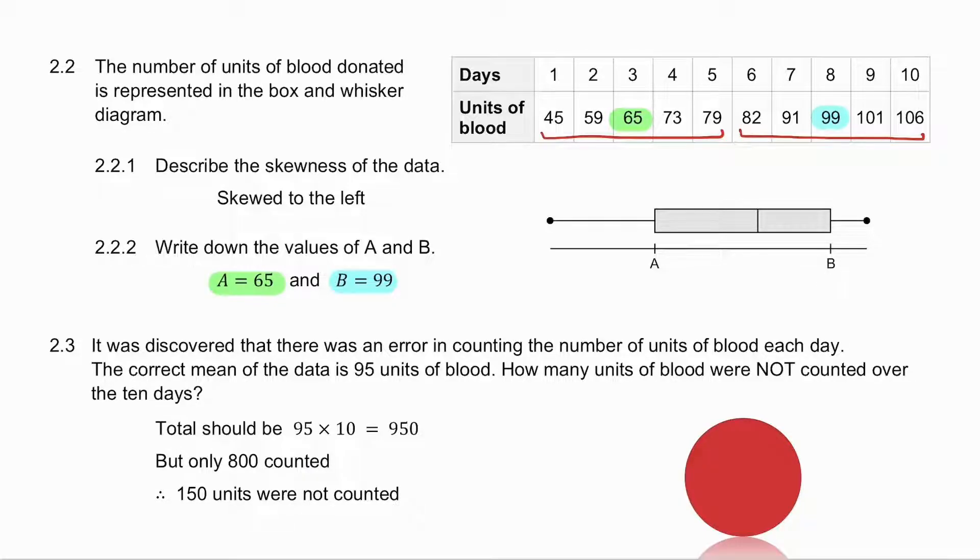2.3. It was discovered that there was an error in counting the number of units of blood each day. The correct mean of the data is 95. How many units of blood were not counted? So if the mean is 95, it means the total should have been 95 times 10, which is 950.